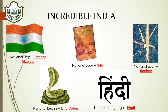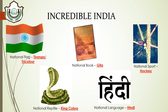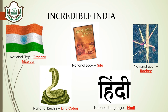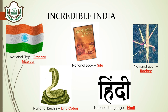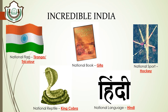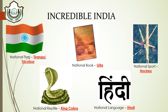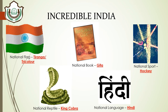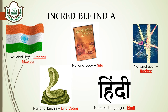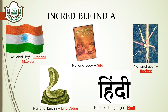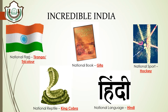Eleventh: the national flag of India is known as Tiranga or Tricolor, because it has three colors — saffron, white, and green. Twelfth: the national book of India is the Gita. Thirteenth: the national sport is hockey.